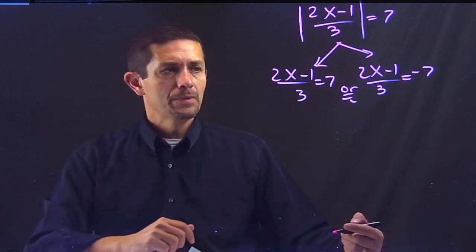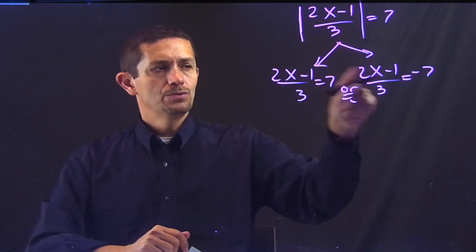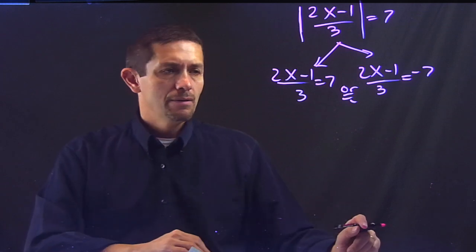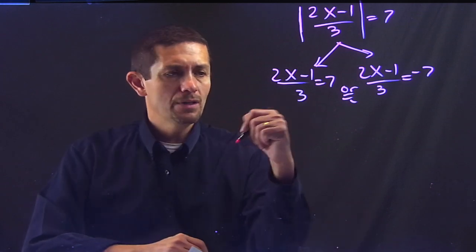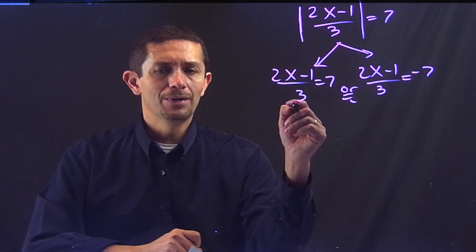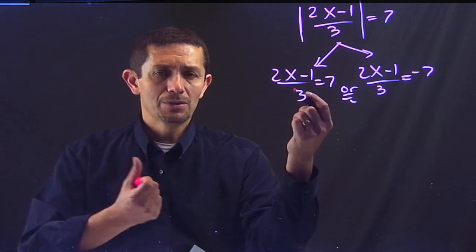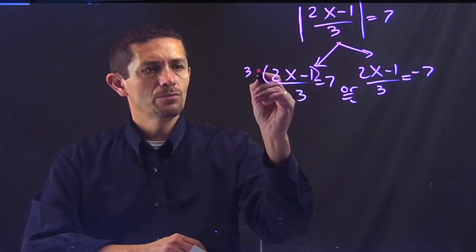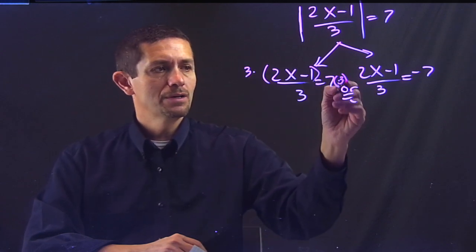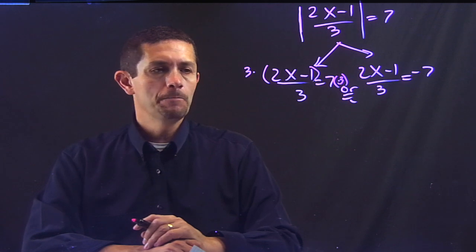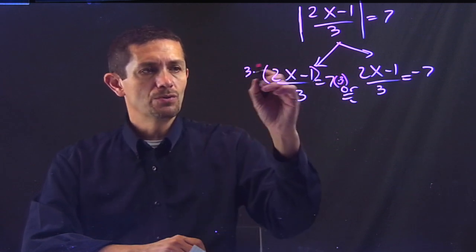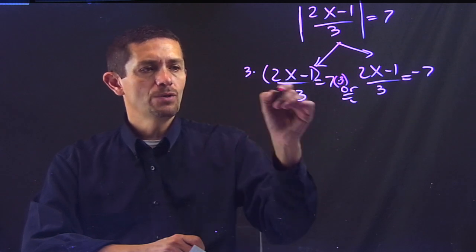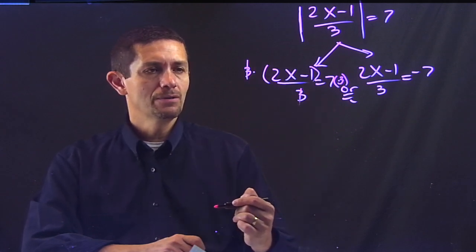So let's keep solving this. Absolute value by itself, two different answers, one positive, one negative. Now we've got to solve this first. So the first thing that we have to solve here is that we have a 3 dividing. What's the opposite of division? Multiplication. So I need to multiply on both sides. That 3, before I start distributing, which is what a lot of people do first, is that 3 I multiply so I can cancel the denominator.